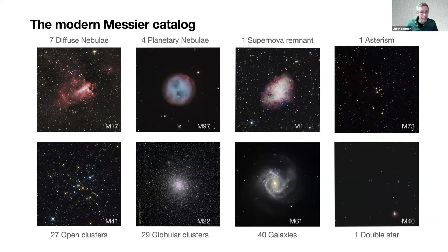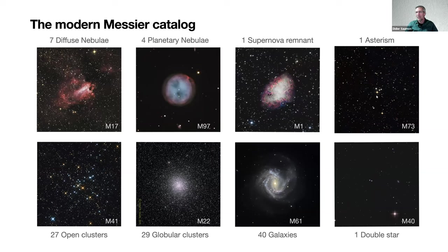The catalog contains different classes of objects: seven diffuse nebulae, four planetary nebulae, one supernova remnant — that's Messier 1 — 27 open clusters, 29 globular clusters, and 40 galaxies — the most numerous. There are also a couple of unusual entries: a double star, Messier 40, and a small asterism of just four stars which he called a cluster, but we now know those stars are unrelated and not associated like stars in open clusters.